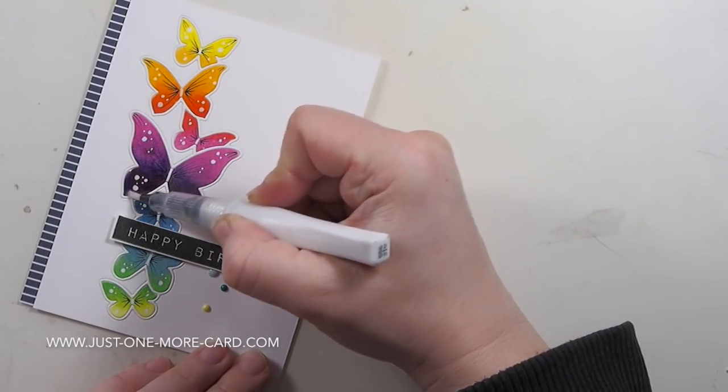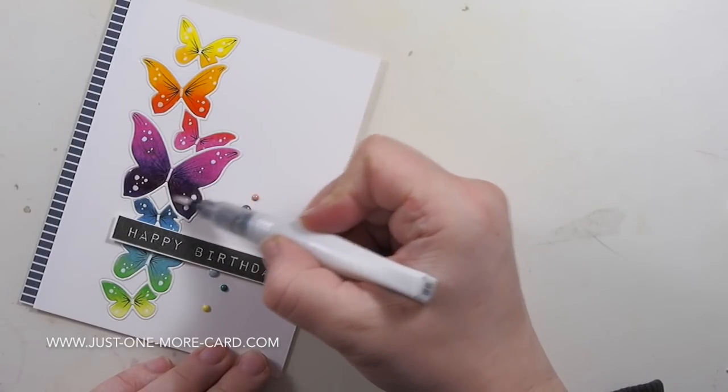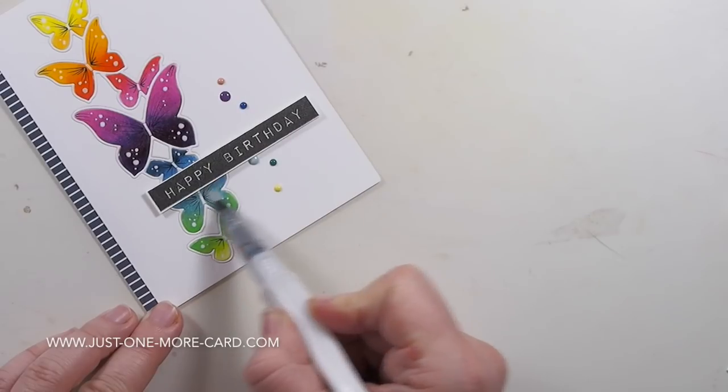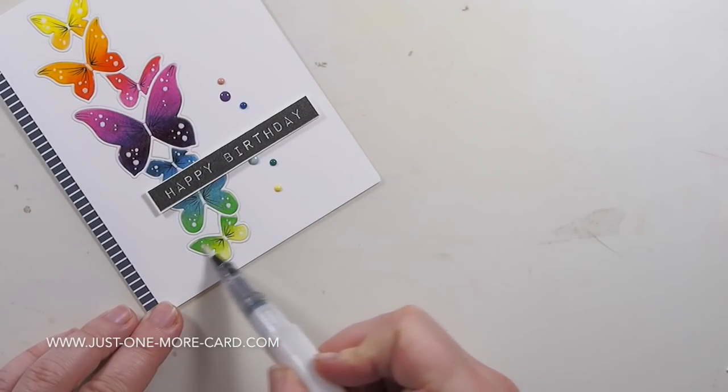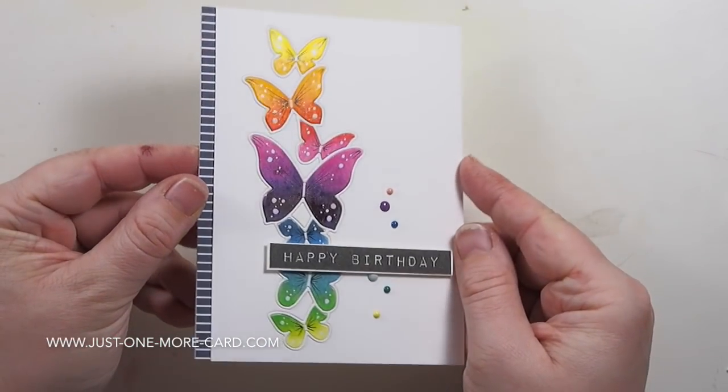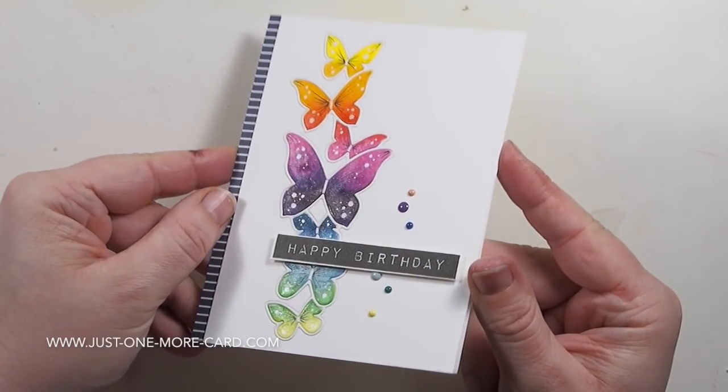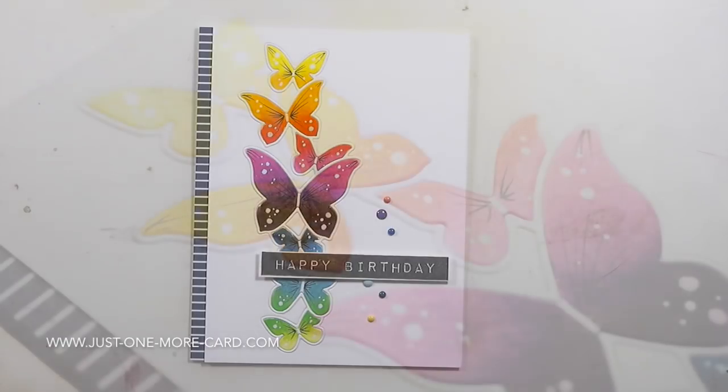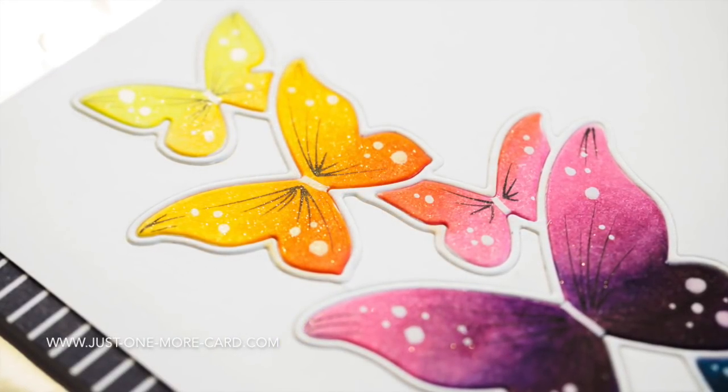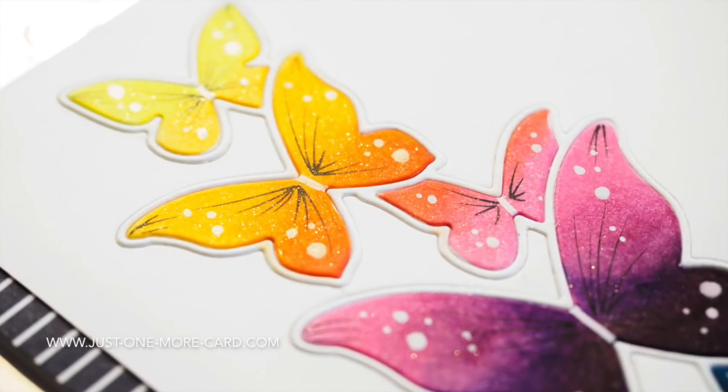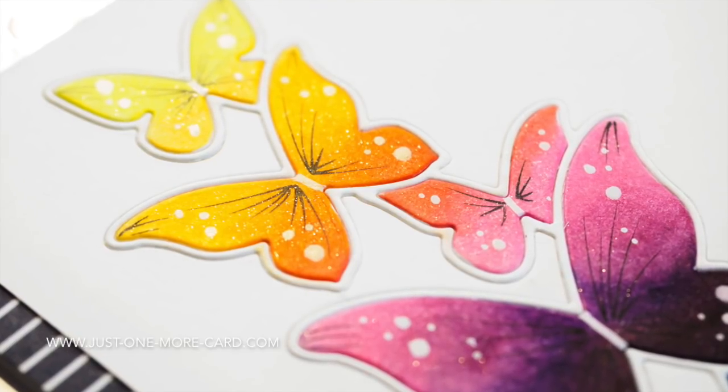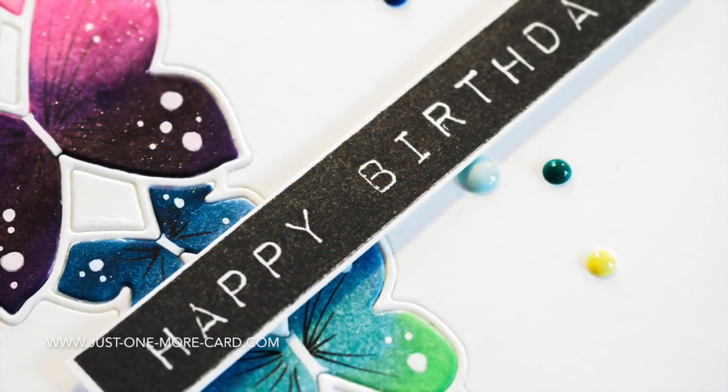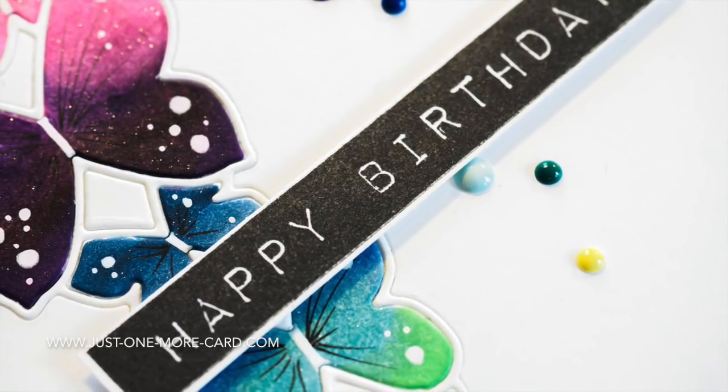Then I'm using my Wink of Stellar clear pen and adding some glitter on top of these butterflies. Be careful, the Sharpie pen, at least the one that I'm using, is water-based. That means that you could smoosh the white dots so you can't go over them too much, basically. I just have to be careful about that. You can see here, at least I hope, a little bit, the glitter that the very subtle glitter that the Wink of Stellar pen adds, but I just really, really like it.